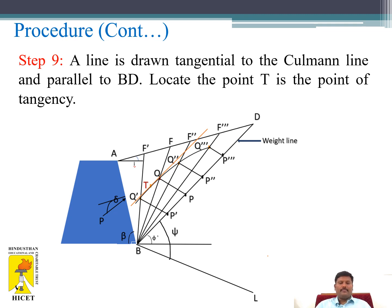After drawing the Cullman's curve, a line is drawn tangential to the Cullman line parallel to BD, the weight line. The point T is located as the point of tangency.